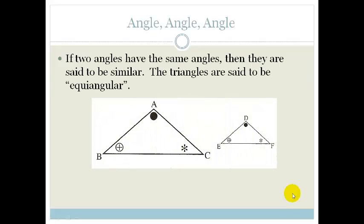So similar triangles don't fit exactly over the other. They have all three angles equal. So if two triangles have the same angles, then they are said to be similar and the triangles are said to be equiangular. So let me show you what I'm talking about.